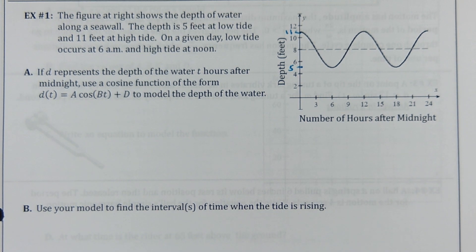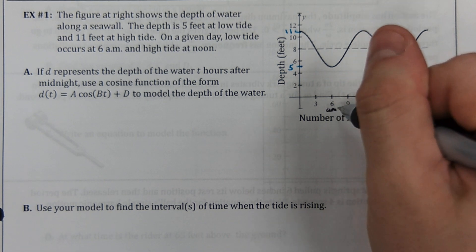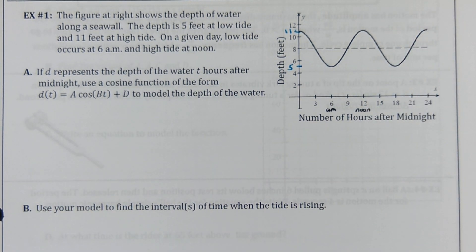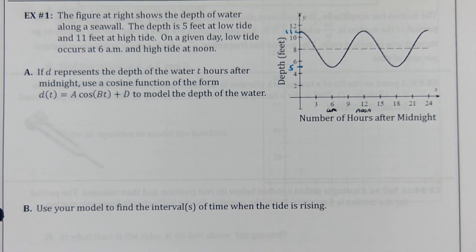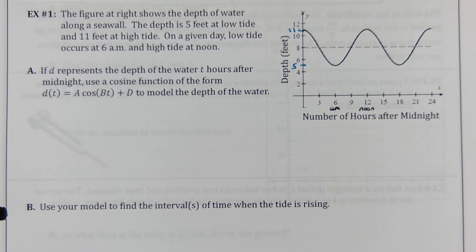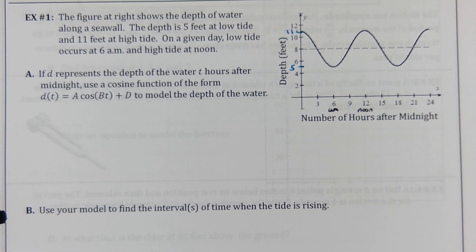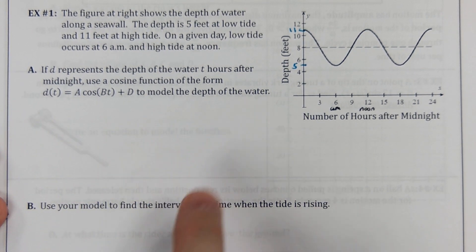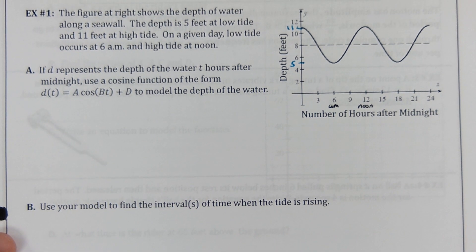On a given day, low tide occurs at 6 a.m. So we can see that this is 6 a.m. And high tide happens at noon. So then what is x equals zero? Well, it says the number of hours after midnight. So x equals zero is clearly midnight. Think of this as military time. So 15 would be 3 p.m. If D represents the depth of the water T hours after midnight, we can use a cosine function in this format to model the depth of our water. We're just going to figure out what A, B, and D all equal in this scenario.